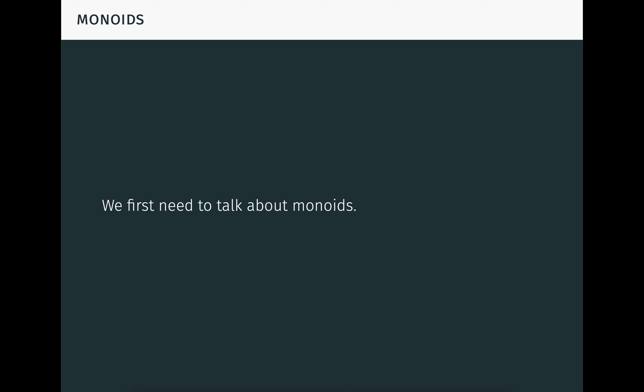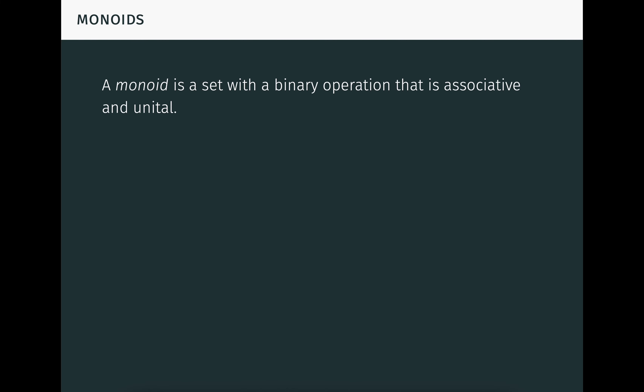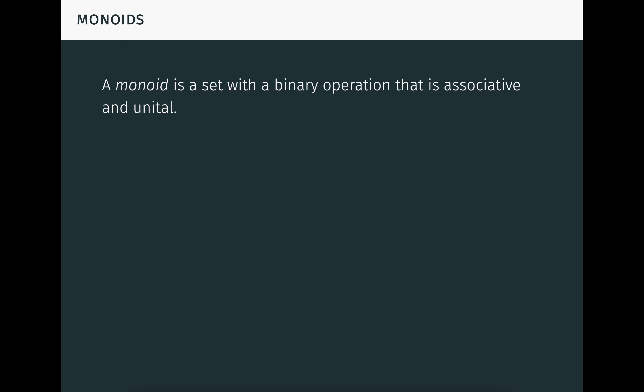To get started, we first need to talk about monoids. A monoid is a set with a binary operation that's associative and unital. More specifically, it's a triple (M, ·, e), where M is a set, · is a binary function on M, and e is an element of M such that the associativity and unit equations are satisfied for all elements of M. Monoids are ubiquitous. For example, the natural numbers form a monoid under addition with zero, and also under multiplication with one.